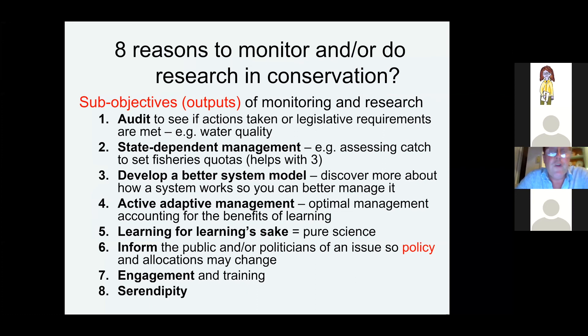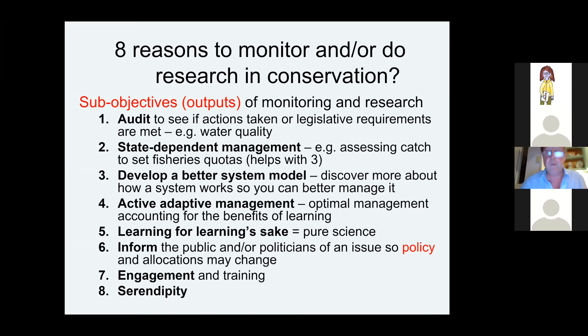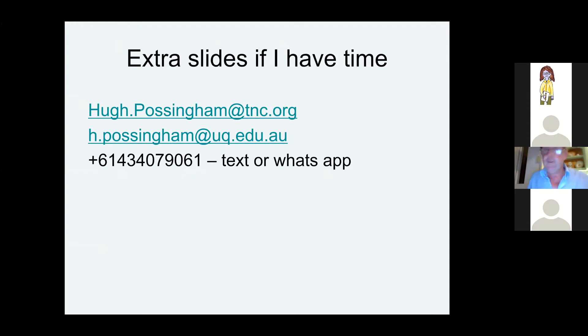So I would encourage everybody who's thinking about monitoring, evaluation, and research to be very clear why it is or isn't serving each of those eight purposes. It doesn't need to be all of them — it only has to be one. Once you've worked out which one it is, think about how you design it to optimize that purpose. If it's about engagement, design a monitoring strategy that makes people happy and want to go into the field. If it's about informing the public, maybe do it on charismatic species — you may not pick the most sensitive species, but the species most likely to deliver the outcome, which is a change in policy. I'm happy to wrap up just there and answer any questions.